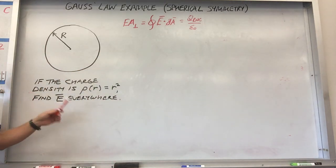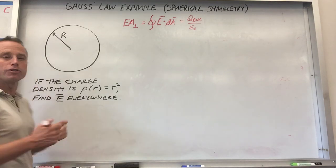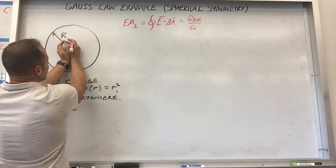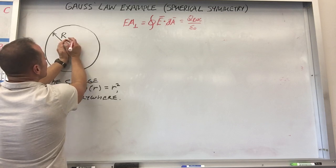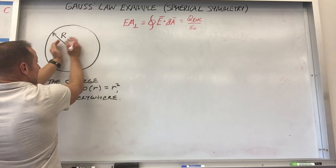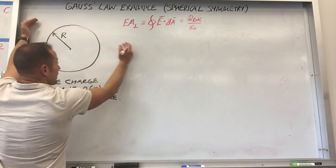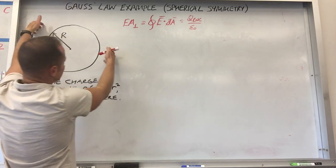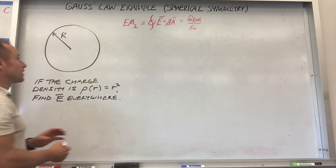Coming back to the problem, we need to find E everywhere, so we're going to divide this into two regimes: inside the ball and outside the ball. Inside the ball, you have a charge density that accumulates more and more charge as you go out, so the amount of charge your Gaussian surface encloses will change. Once you're outside the ball, the amount of charge you capture doesn't change as you move out, and you'll just get a field like a point charge.